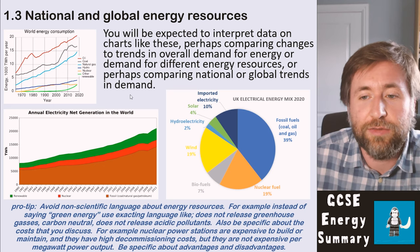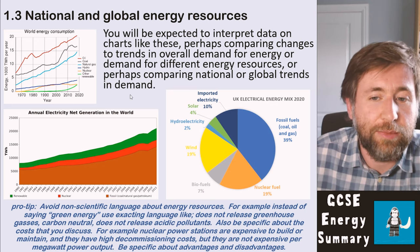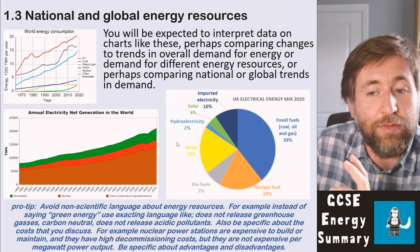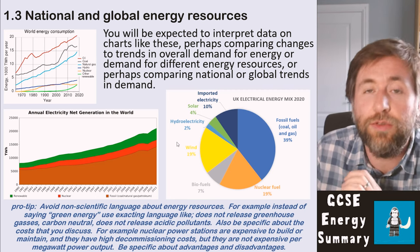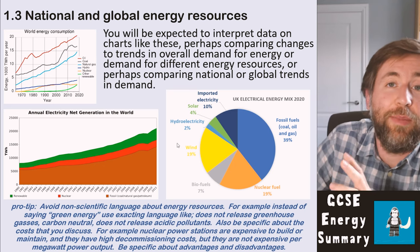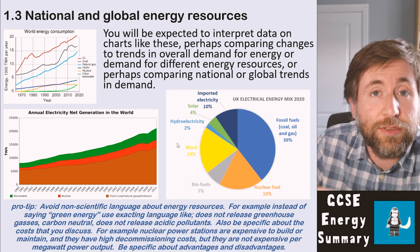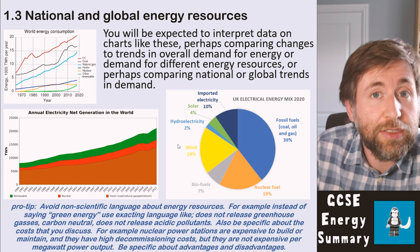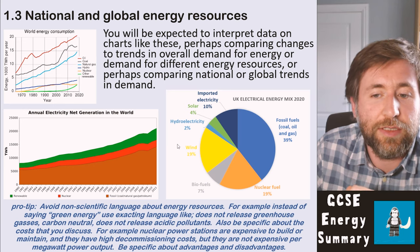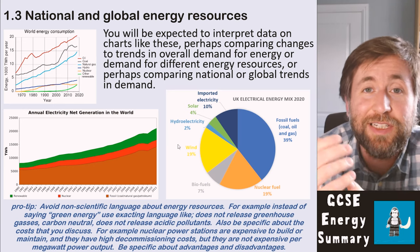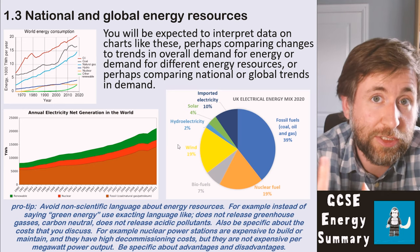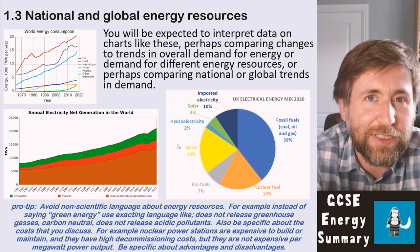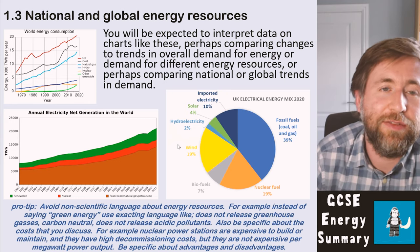You need to avoid non-scientific language about energy resources — don't say 'green energy,' don't say 'pollutes.' Use exact language like 'does not release greenhouse gases,' 'is carbon neutral,' or 'does not release acidic pollutants.' Also be specific about costs — don't just say 'nuclear costs more,' as you won't get a mark for that. Instead say: 'nuclear power stations are expensive to build or maintain' or 'they have high decommissioning costs.' Nuclear is actually less expensive per megawatt power output than many other options, which is one of its advantages, so be really specific about the advantages and disadvantages you give.